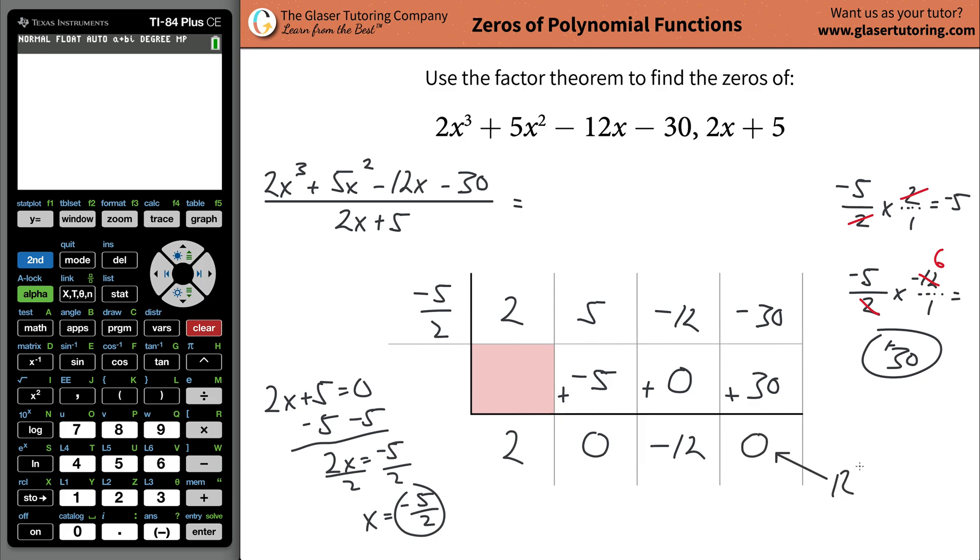That means the remainder is zero because remember that's what's inside of this cell. That's what the remainder is. So now, since I divided this linear function into this polynomial function and I got a remainder of zero, what that means is I know for a fact the factor theorem says that this is now a factor. That's a factor.